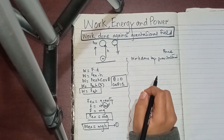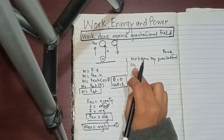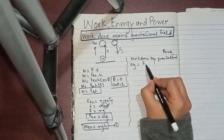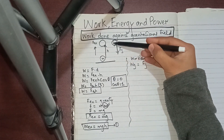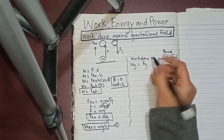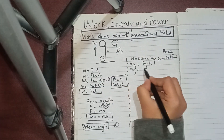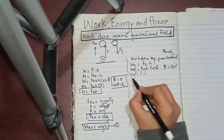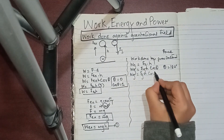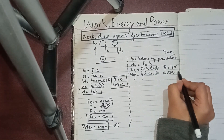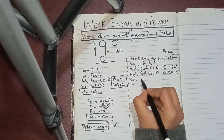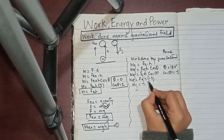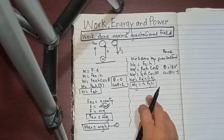The work done by the gravitational force, W_g, equals the gravitational force × displacement × cos(θ). Here, the displacement is upward (h) but gravity acts downward, so the angle between them is 180°. Therefore: W_g = Fg × h × cos(180°) = Fg × h × (−1) = −Fg × h. So the work done by gravity equals −Fg × h.